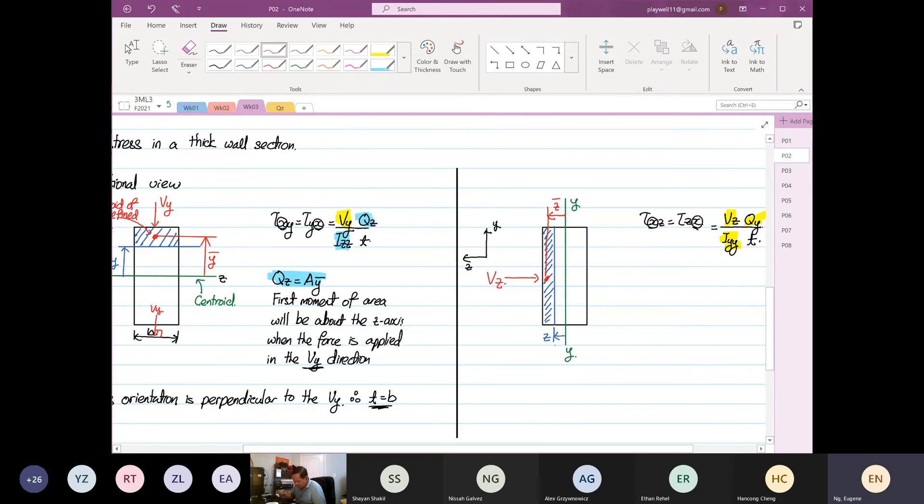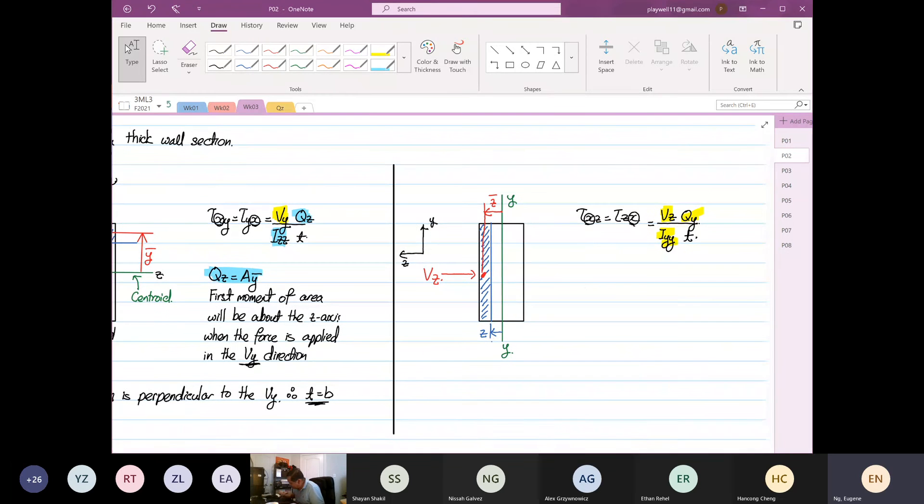So now we are interested in the first moment of area about the y axis. Yes or no? Not about the z. So this is Qy. This is equal to A z bar. And I'll copy the text over.